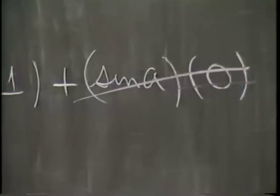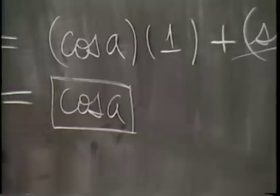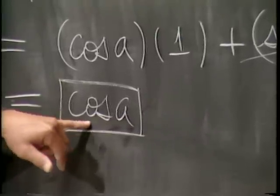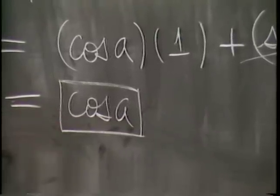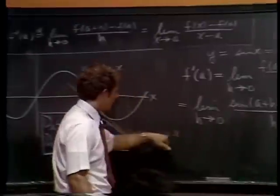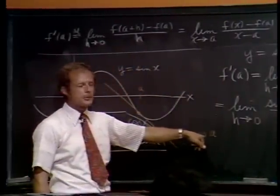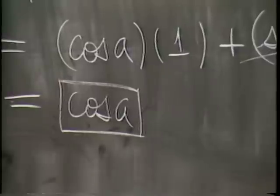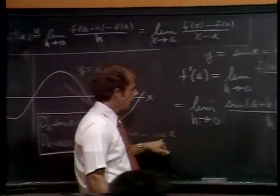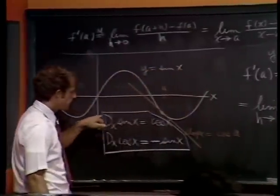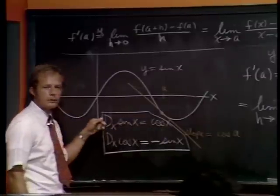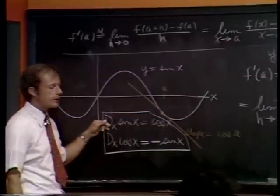And over here, see? I predicted it. It's amazing, isn't it? And, of course, that gives you, because a is general, this relationship here. Derivative of the sine is the cosine. OK. Was there a question? Someone looked like they were ready to ask a question.